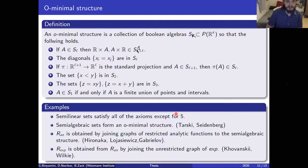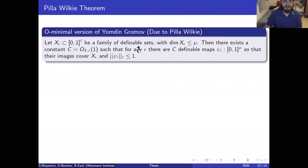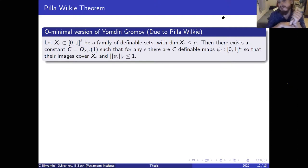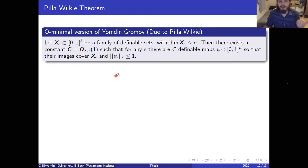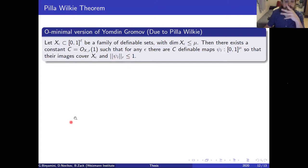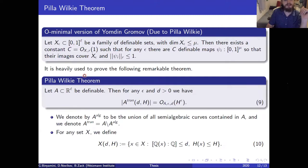Pila and Wilkie, in order to use Yomdin-Gromov ideas in arithmetic geometry, needed an o-minimal version of Yomdin-Gromov for families. Let X_ε be a family of definable sets where each fiber has dimension less than μ. There exists a constant C — depending on the geometry of X but not on ε — such that for any ε there are C definable maps whose images cover X_ε and which are controlled. This is the o-minimal version, and it is heavily used to prove the remarkable Pila-Wilkie theorem.